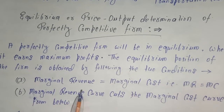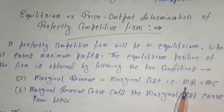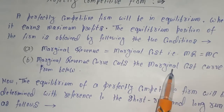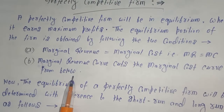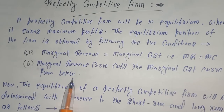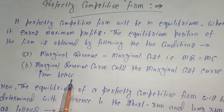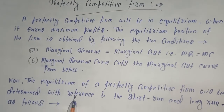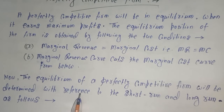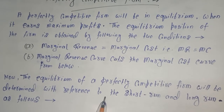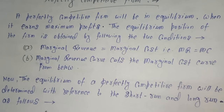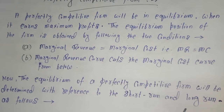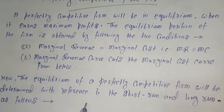The first condition is marginal revenue must be equal to marginal cost — MR equals MC. The second condition is that the marginal revenue curve cuts the marginal cost curve from below. These are the two most important conditions for the equilibrium position of the firm, and they apply in both the short run and the long run.